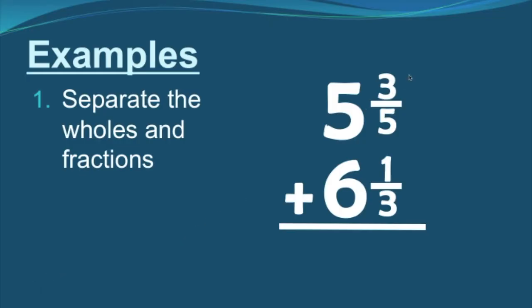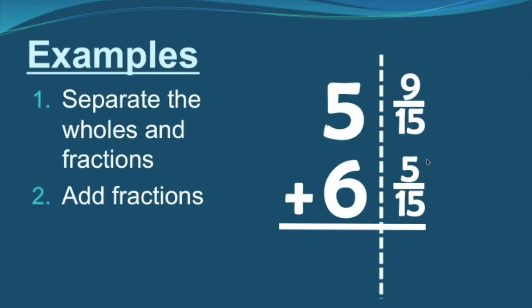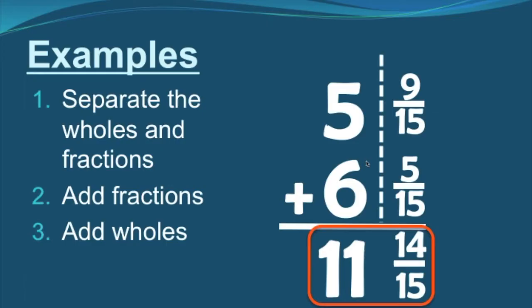For this example, we have five and three fifths plus six and one third. Step one: separate the wholes and the fractions. Step two: add the fractions — but again, these are unlike fractions with different denominators, so we can't just add the numerators. We change the denominators to be the same; the LCD is 15, so our fractions become nine fifteenths and five fifteenths. Nine plus five gives us 14 over 15. Step three: add the wholes — no carrying needed here. Five plus six gives us 11. Our answer is 11 and 14 fifteenths.